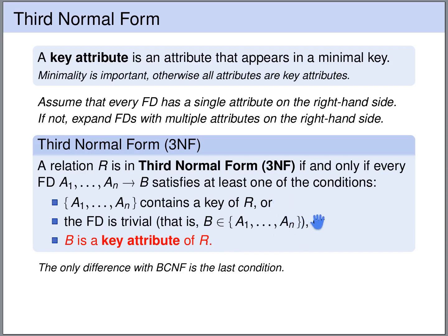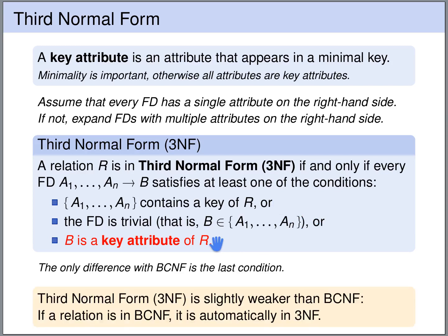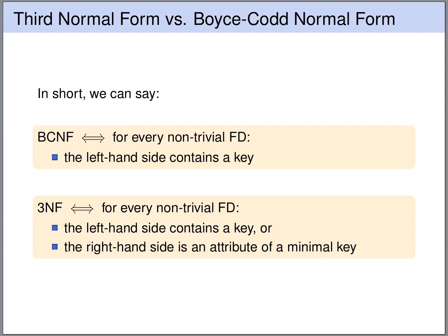Since these conditions are in disjunction, the third normal form is slightly weaker than the Boyce-Codd normal form. So every relation that's in Boyce-Codd normal form is automatically also in third normal form, but not the other way around, due to this additional condition. In short, a relation is in Boyce-Codd normal form if and only if, for every non-trivial functional dependency, the left-hand side contains a key. A relation is in third normal form if and only if, for every non-trivial functional dependency, the left-hand side contains a key, or the right-hand side is an attribute of a minimal key.